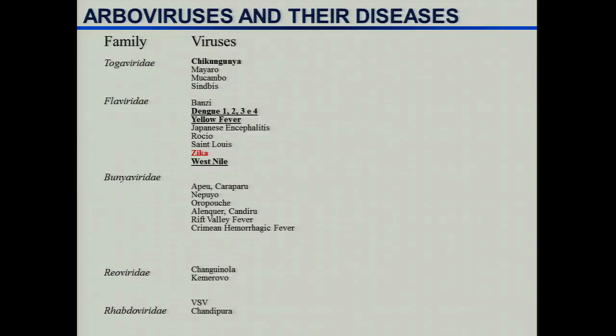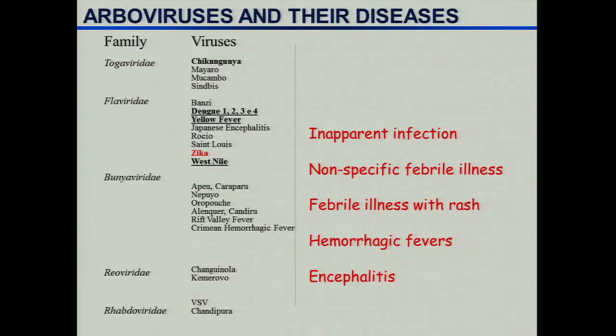Studies showed antibody positivity in people from these areas. Zika virus is in the flaviviridae family. All viruses listed in that column are flaviviruses. Dengue, chikungunya, and yellow fever usually coexist in the same places, but chikungunya is a togavirus, so serologic tests for chikungunya would not interfere with Zika virus diagnosis. These viruses can cause apparent infection, unspecific febrile illness, illness with a rash, hemorrhagic fevers, and encephalitis.